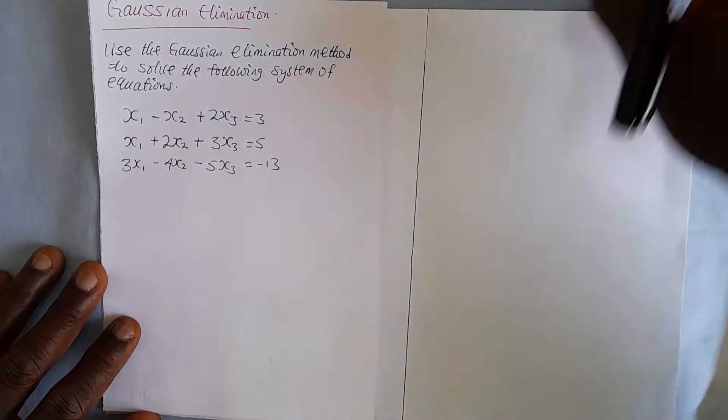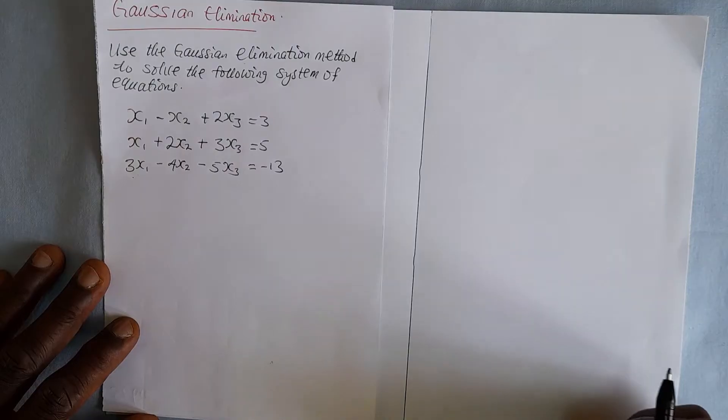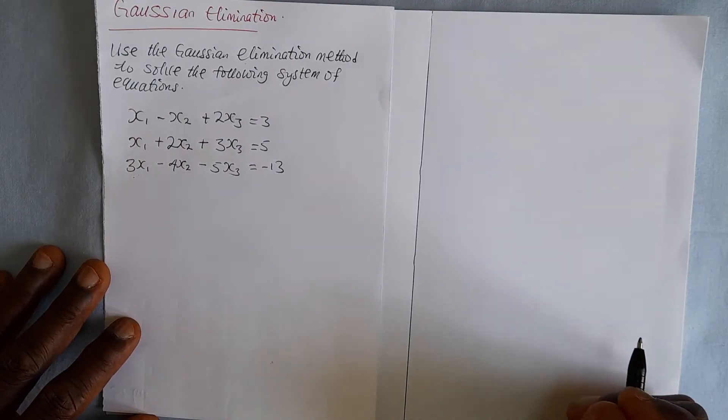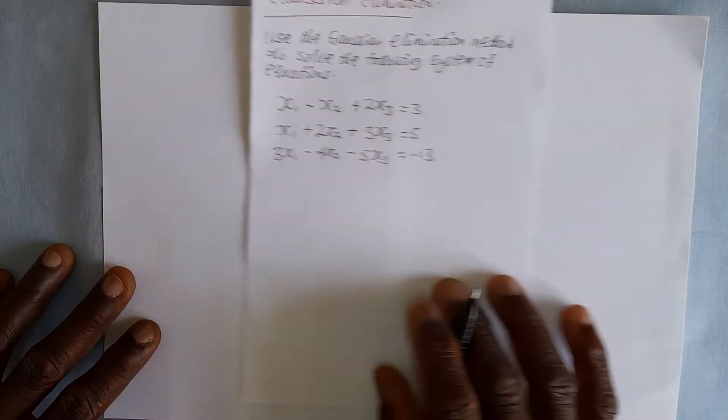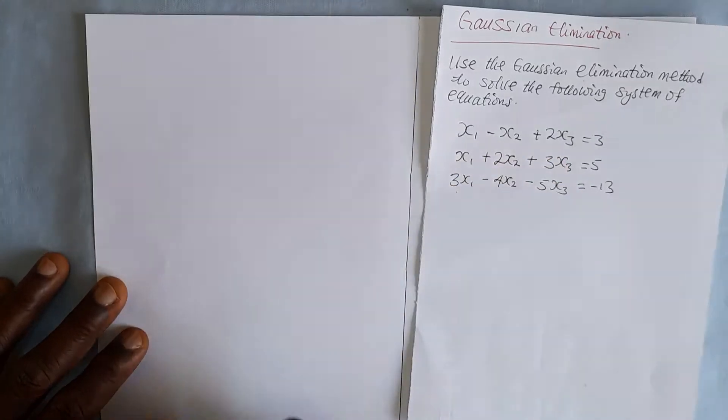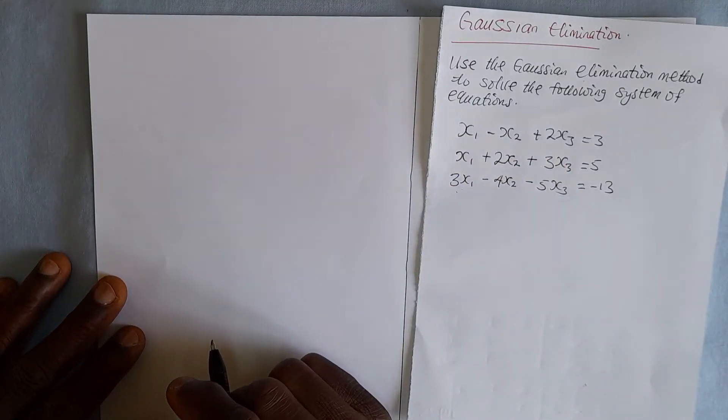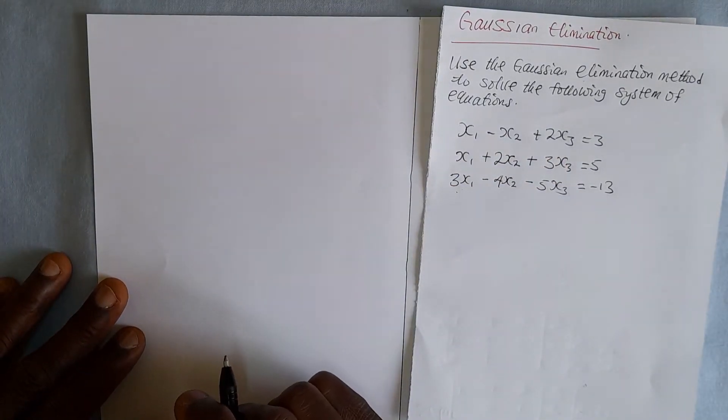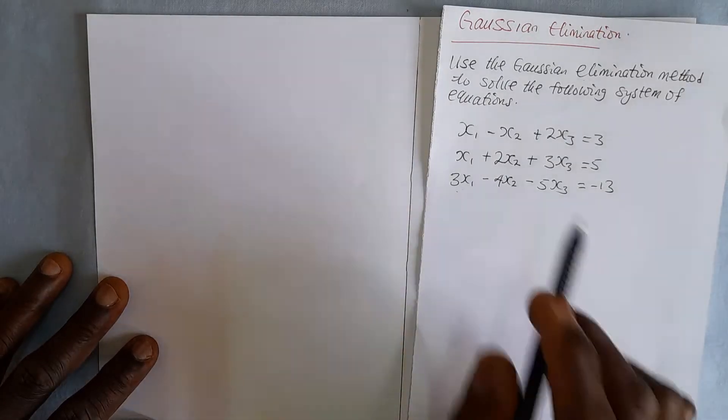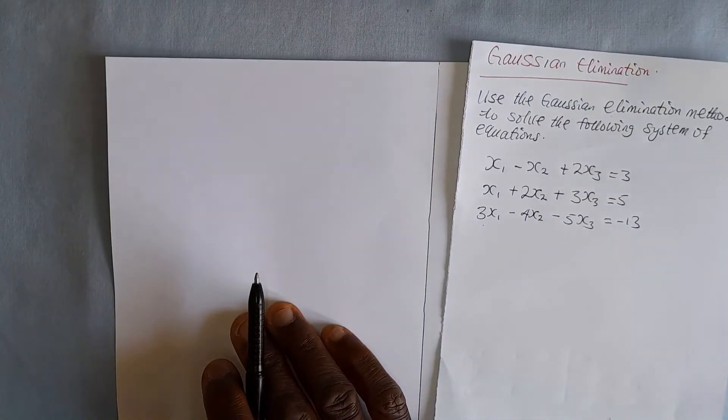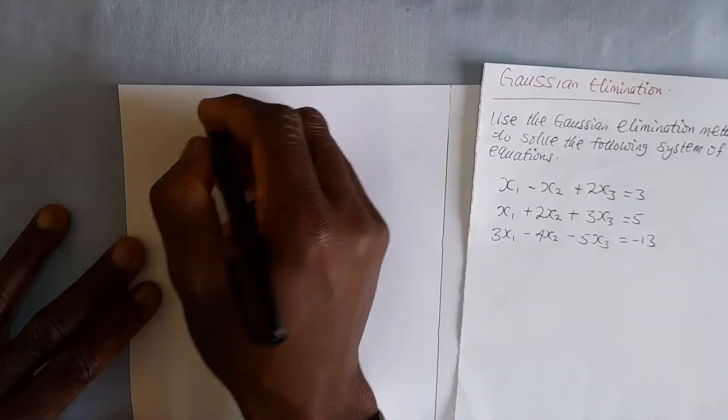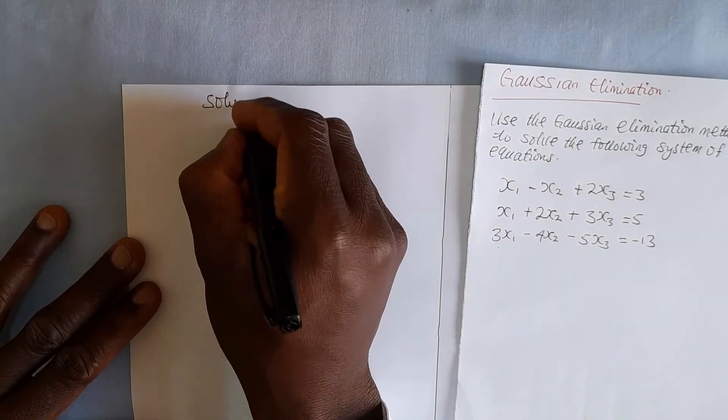Consider the system presented here. When you have a question like this, what are you supposed to do? The first thing is, we have to rewrite this in an augmented matrix form. That is, we take the coefficients of the variables and put them in a matrix form. Let's proceed. Solution.